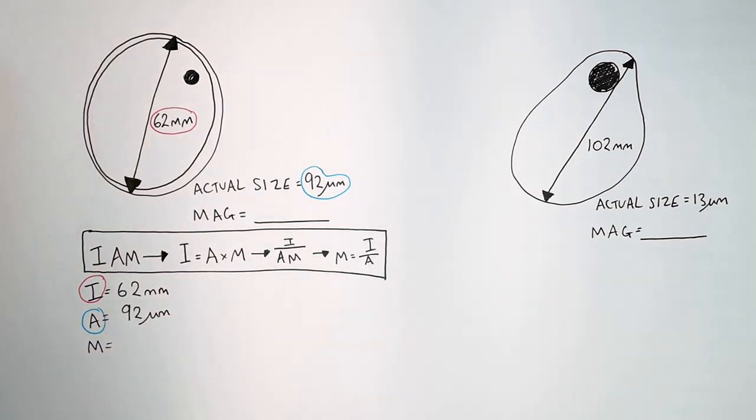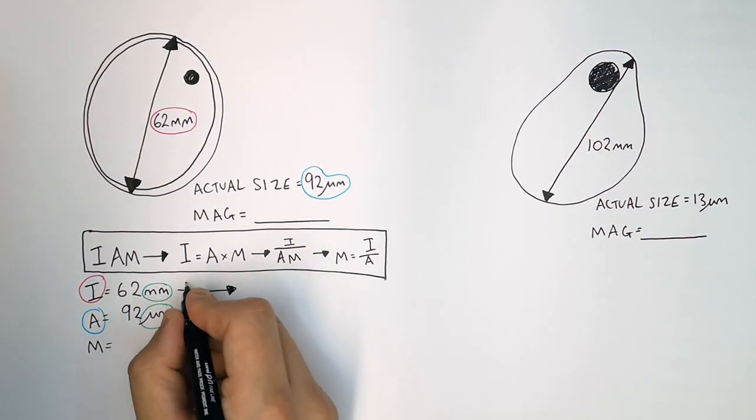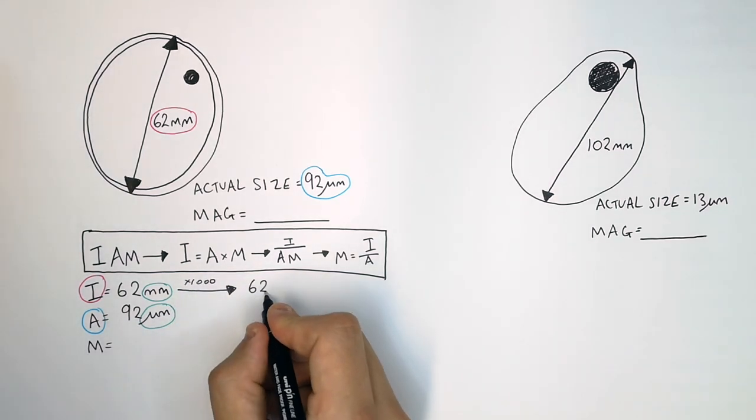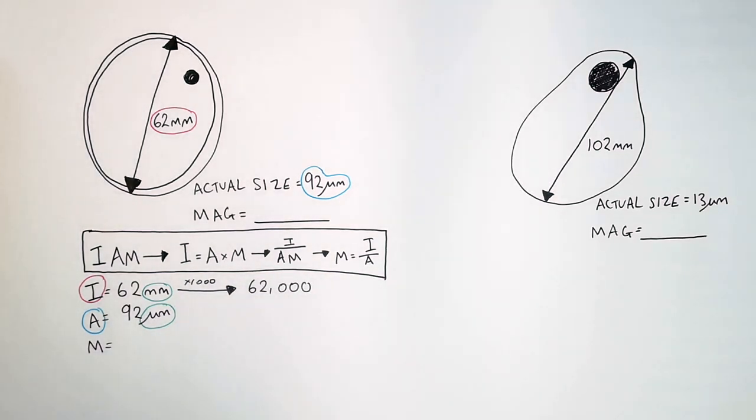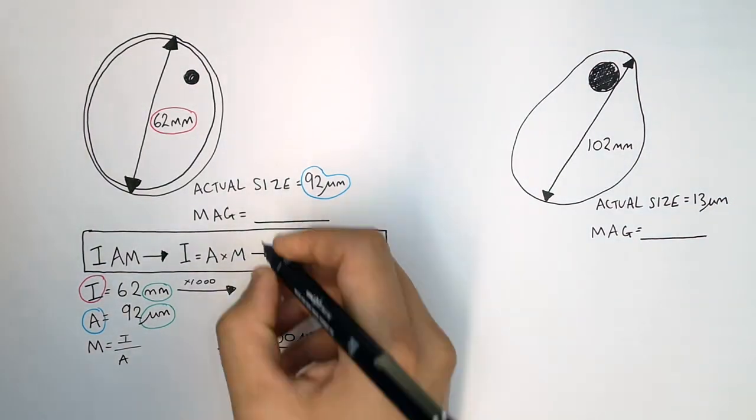So to calculate M, you firstly must convert one of the units. I always convert millimeters to micrometers because you simply times it by 1000 after your zeros. So now you've got 62,000 micrometers. To calculate magnification at 62,000 over 92, that will give you a magnification of 674.